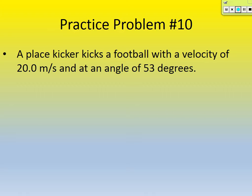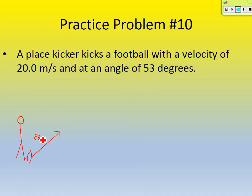Practice problem number 10. A place kicker kicks a football with a velocity of 20 meters per second at an angle of 53 degrees. Step number 1 is always the same — draw a picture. Let's draw a picture of this place kicker. He's going to kick it at some angle — 53 degrees — at 20 meters per second. So 20 meters per second is going to be our hypotenuse. Now we need to break that initial velocity into its component parts using a triangle.